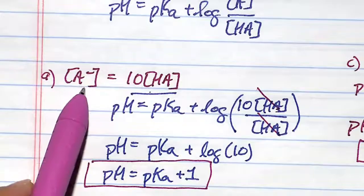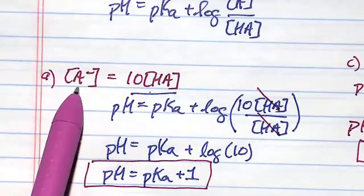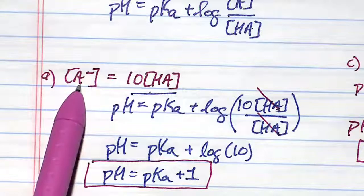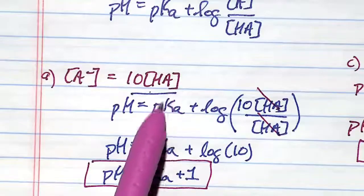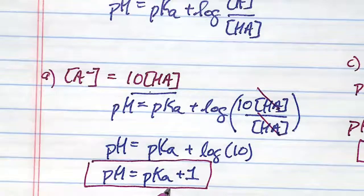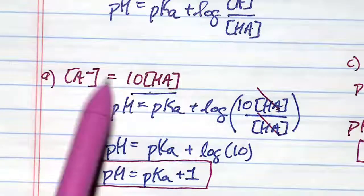If you have 10 times the amount of conjugate base to that of conjugate acid, your pH only goes up by one unit, even though you have 10 times the amount.